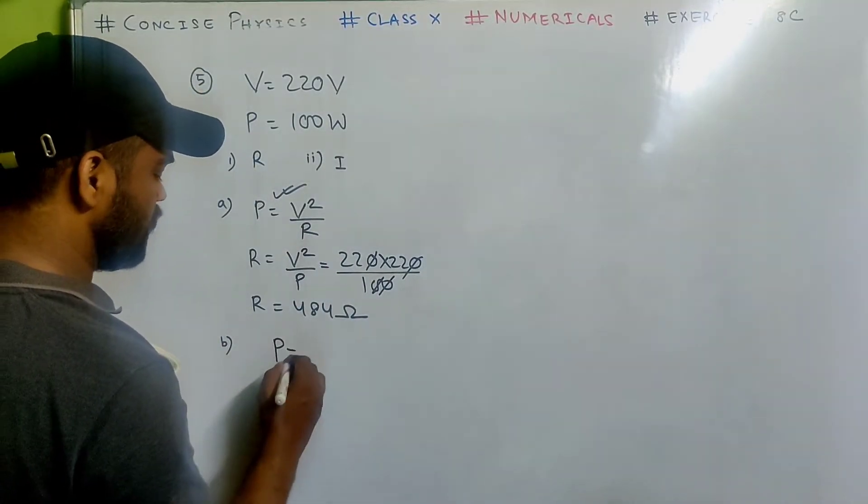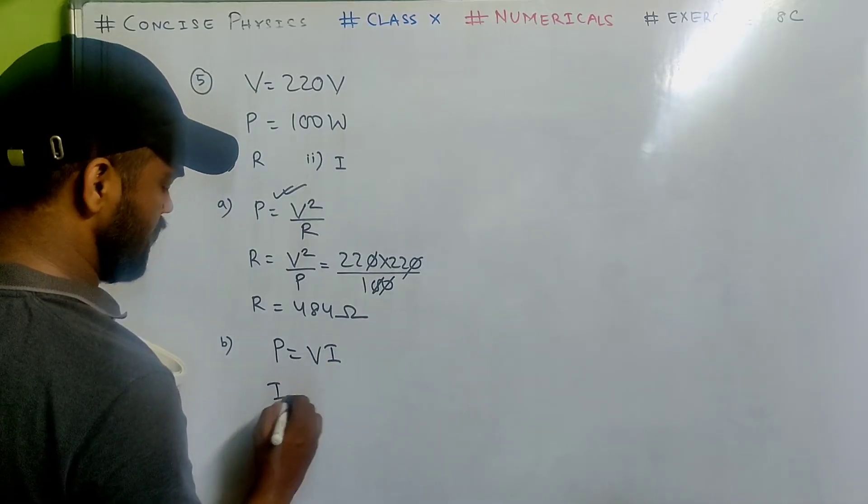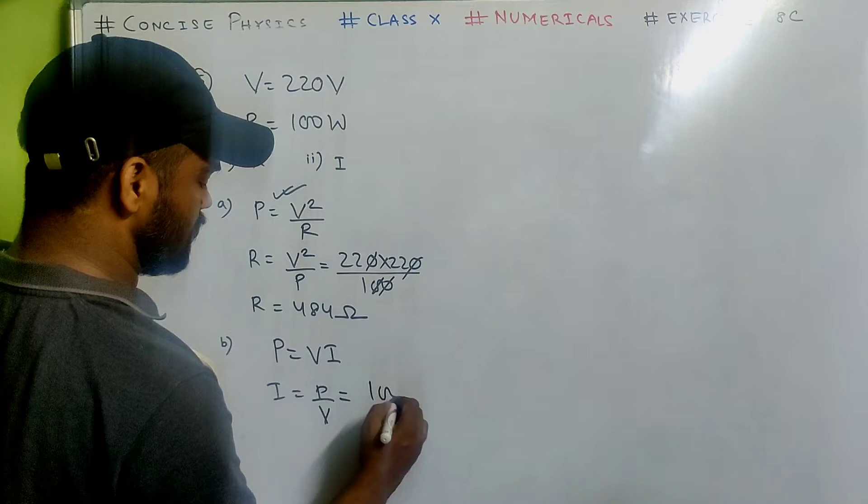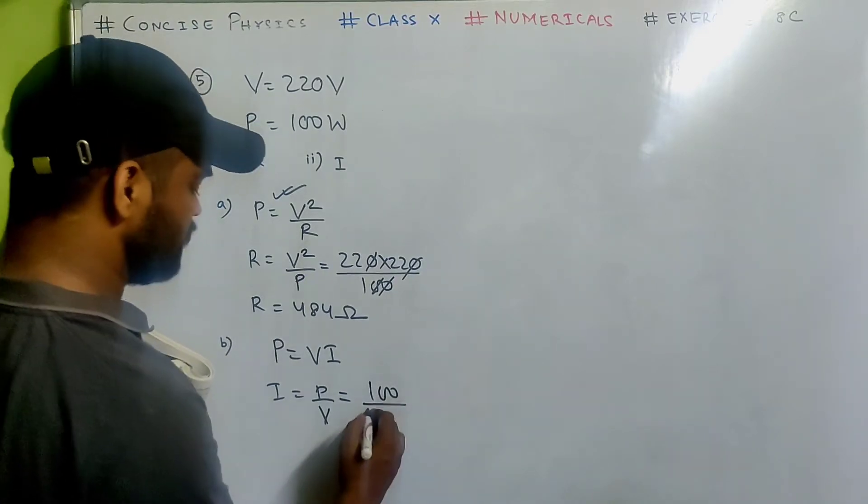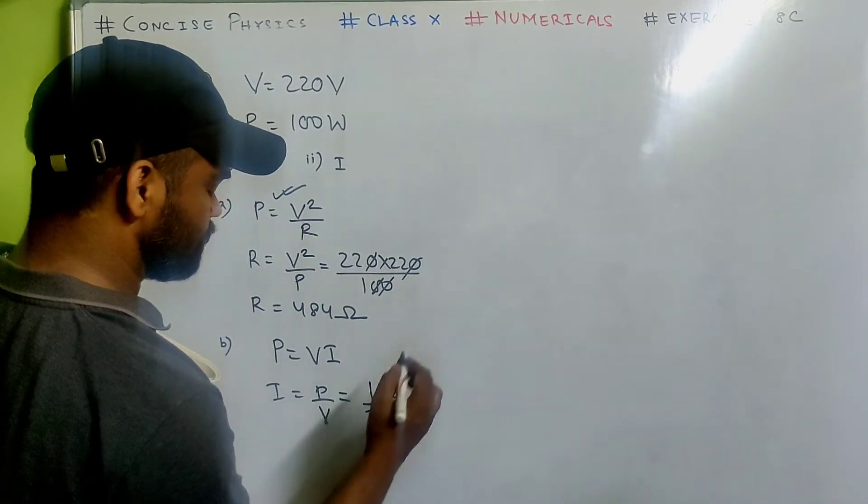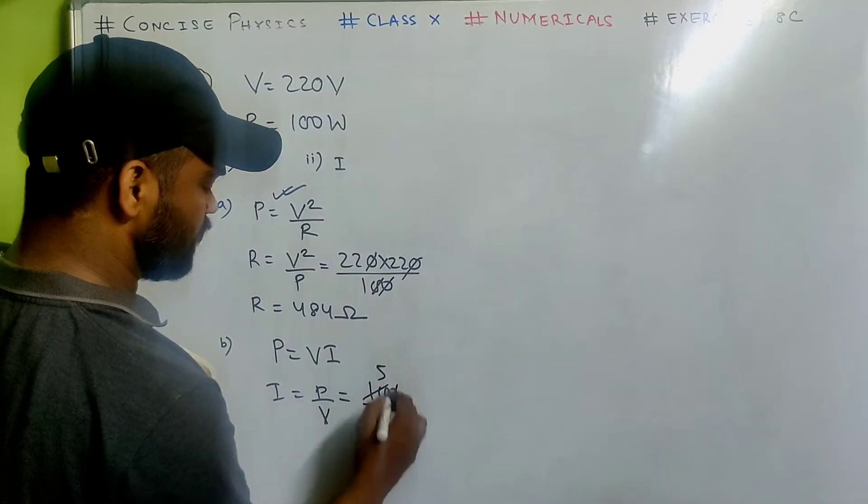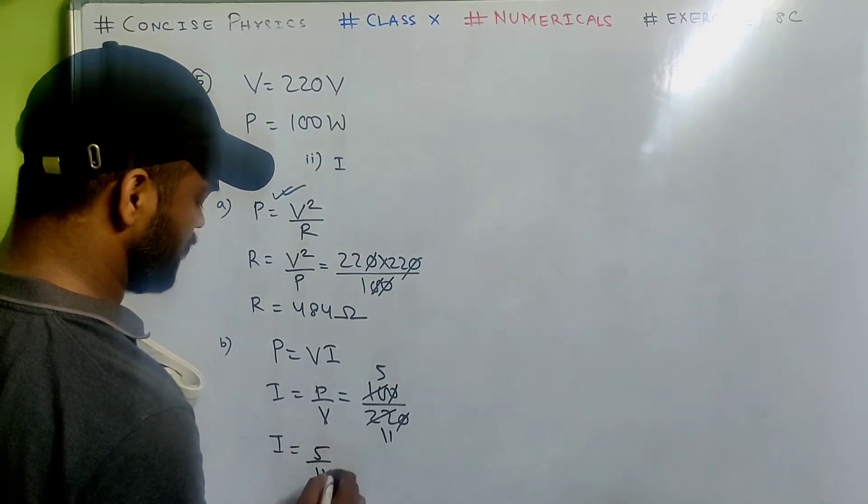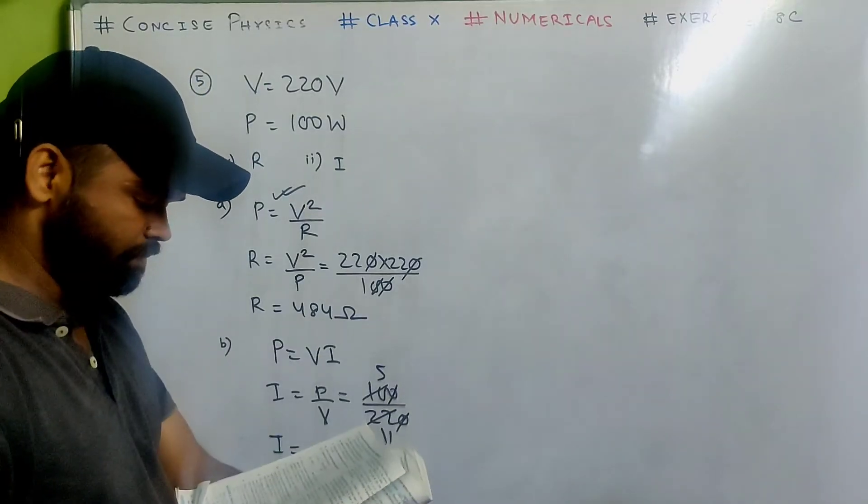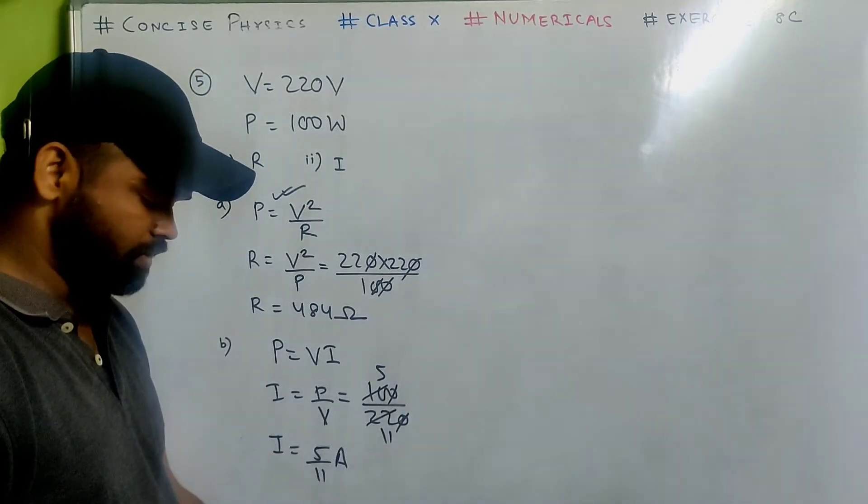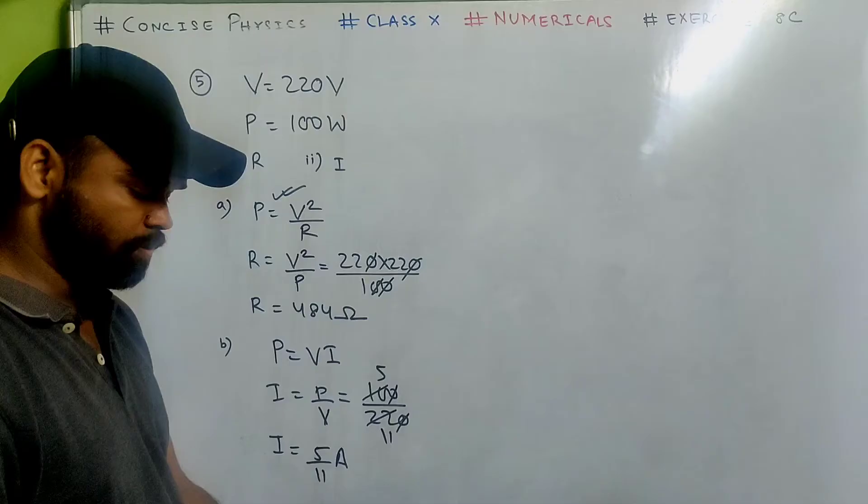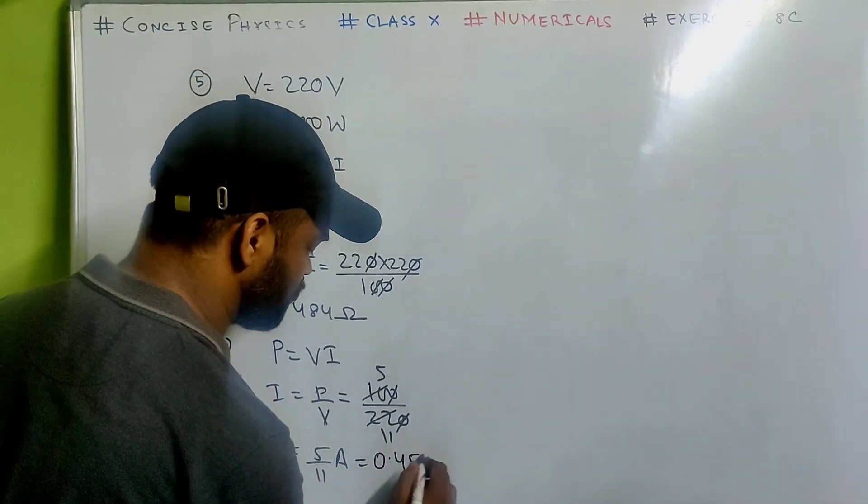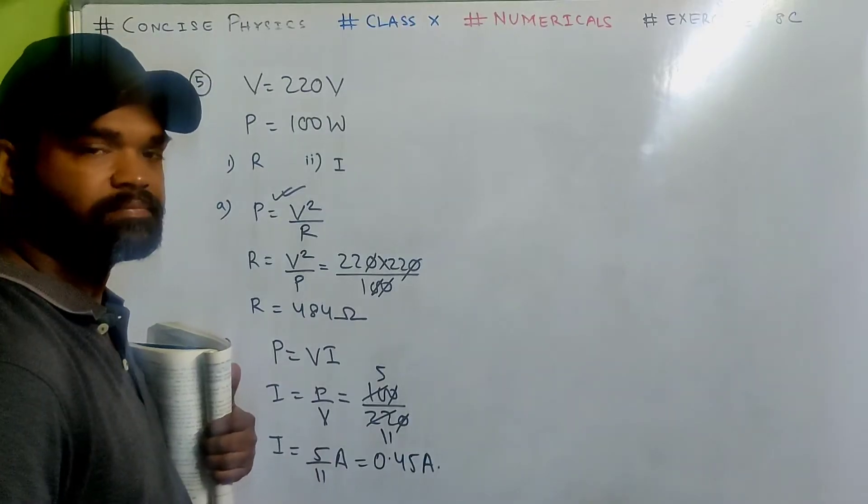Number 2. Power equals to v i. So i is p by v. So p is 100 and v is 220. Solve it. 5 times 11 times. So i equals to 5 by 11 ampere. They have changed it to decimal. That is 0.45 ampere.